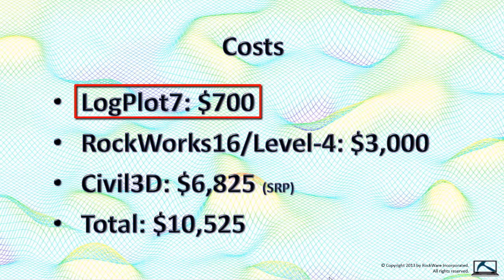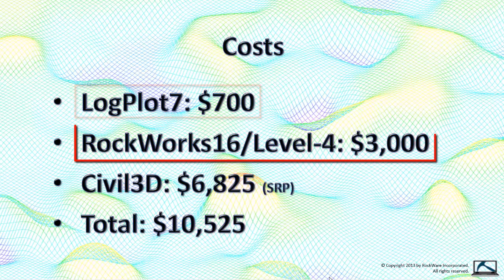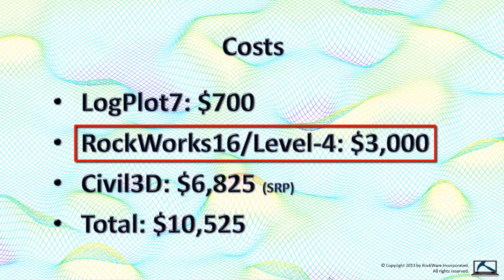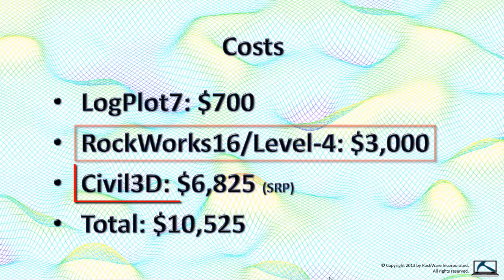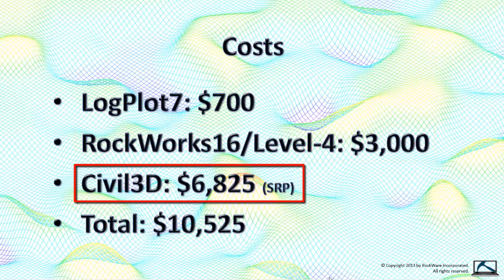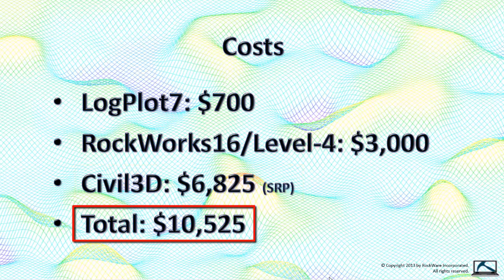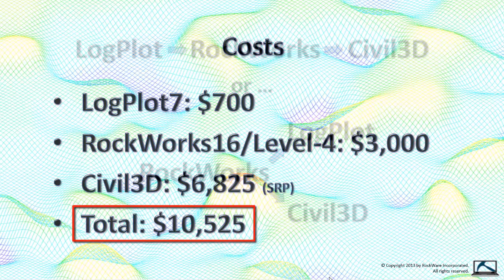Logplot is $700. The version of Rockworks that I'm recommending is $3,000. The suggested list price of Civil 3D is $68.25 per month. All of this totals $10,525.